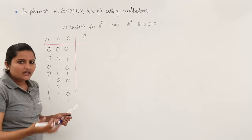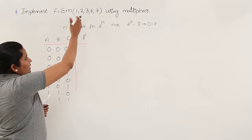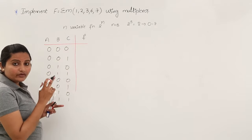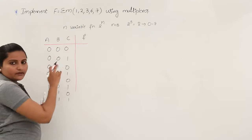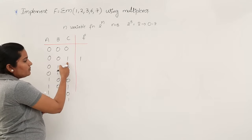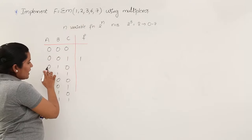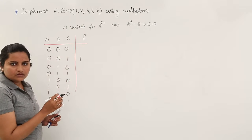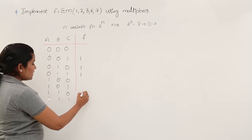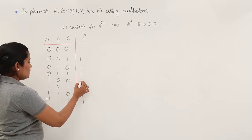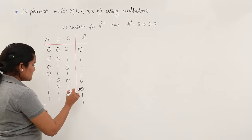Since they directly gave us the min terms, we know where the function is 1. The value at 0 0 1 must be 1 — this is min term 1. At min term 2, the value is 0 1 0 and the output is also 1. At 3 you are having 1, and at 6 you are having 1, and at 7 you are having 1. Remaining positions — 0, 4, and 5 — are 0. So I am closing this truth table.